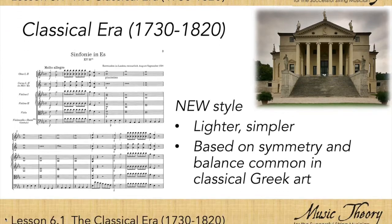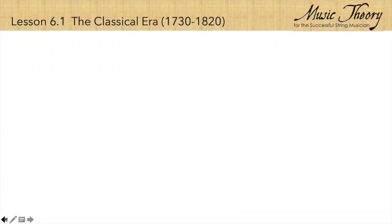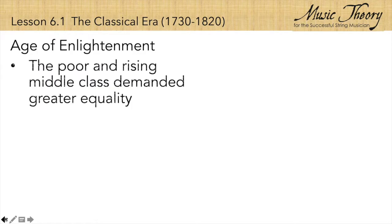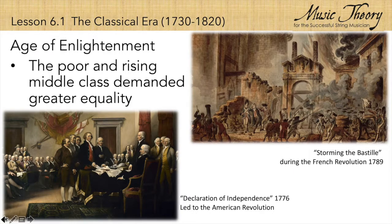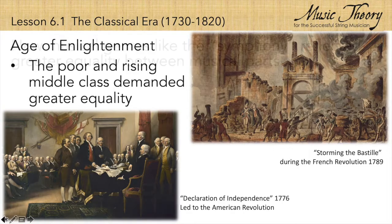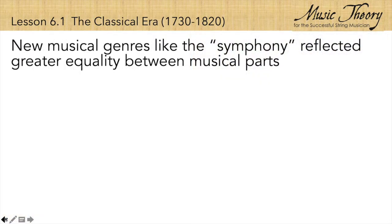They also saw a shift in social structure which came to be known as the Age of Enlightenment. People in the poor and rising middle classes pushed for greater equality. It was a social and cultural revolution that contributed to the American Revolution in 1776 as well as the French Revolution in 1789. New musical genres like the symphony reflected the ideals of the Age of Enlightenment.